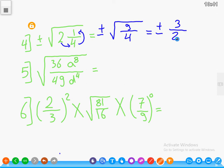Root 36 a to the power 8 over 49 d to the power 4. The root of 36 is 6, and root of a to the power 8—we will divide 8 by 2, which equals 4, so a to the power 4. In the denominator, the root of 49 is 7 and the root of d to the power 4 is d to the power 2.